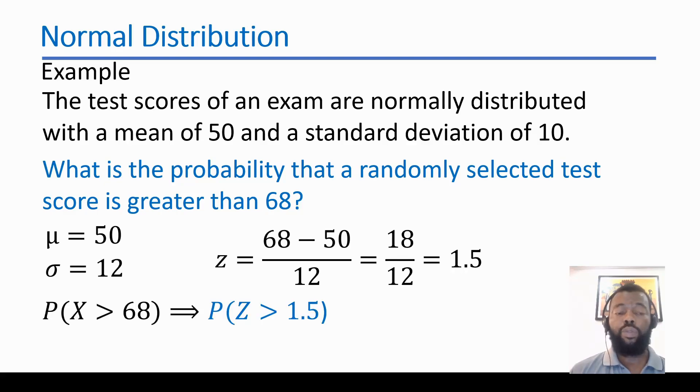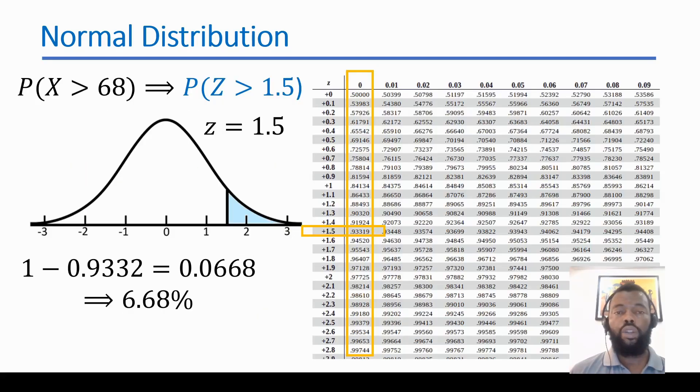What is the probability that a randomly selected test score is greater than 68? We have here a mean of 50, standard deviation of 12, and we need a value that is greater than 68. In standardized form this is 1.5, and we got this from this formula. In the normal distribution table, it corresponds to 0.93319. As we need the area of the right side, we have to have the all area, which corresponds to 1 minus 0.9332. It will correspond to 6.68%.